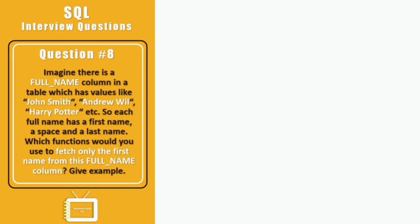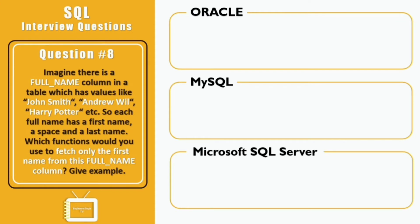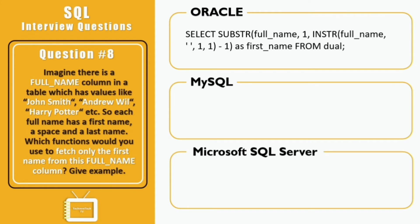Question eight: imagine there is a full name column with values like 'John Smith', 'Andrew Will', 'Harry Potter' — each with a first name, a space, and a last name. Which function would you use to fetch only the first name? In Oracle, we can use the SUBSTR function to get a substring based on start and end position, and the INSTR function to find the position of a particular string within the text.